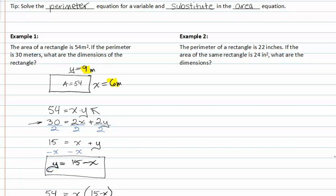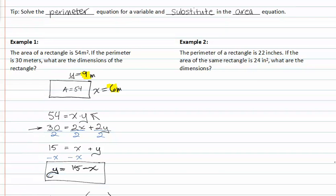In example two, the perimeter of a rectangle is twenty-two inches. If this is x and this is y, I know that I can rewrite the perimeter as two x plus two y is equal to twenty-two inches. That's the perimeter. If the area of the rectangle is twenty-four, that would be x times y equals twenty-four inches squared. What are the dimensions?